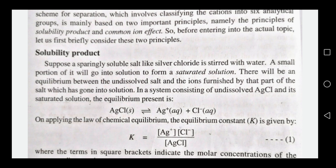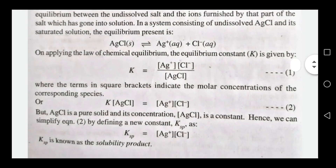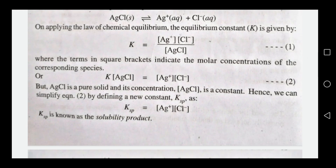AgCl undergoes dissociation. The undissolved part of AgCl establishes a chemical equilibrium. The equilibrium constant K is equal to the concentration of Ag⁺ and Cl⁻ divided by the concentration of AgCl. Since AgCl is a pure solid, its concentration is constant, so we simplify to: Ksp = [Ag⁺][Cl⁻]. Ksp is equal to the solubility product.